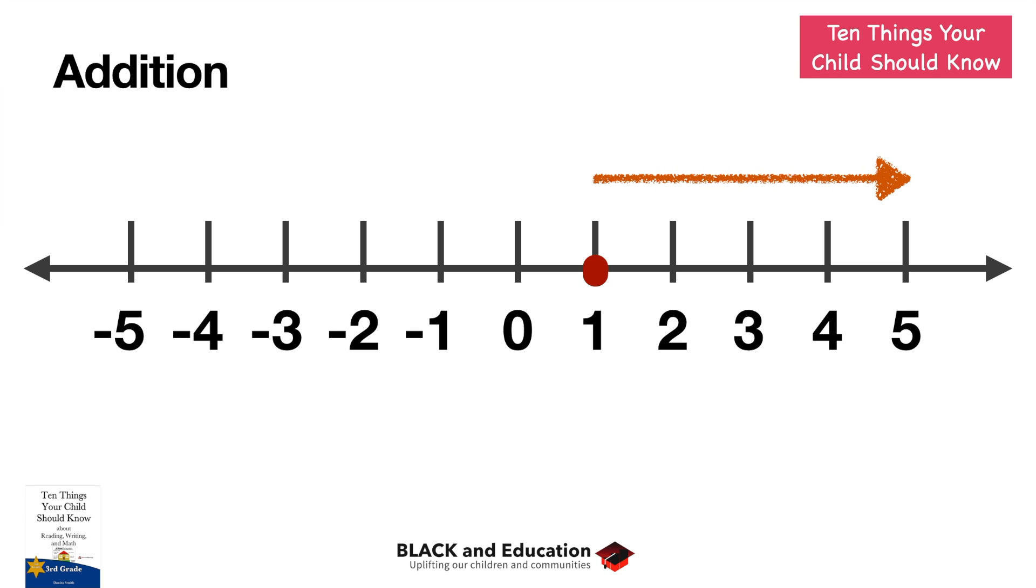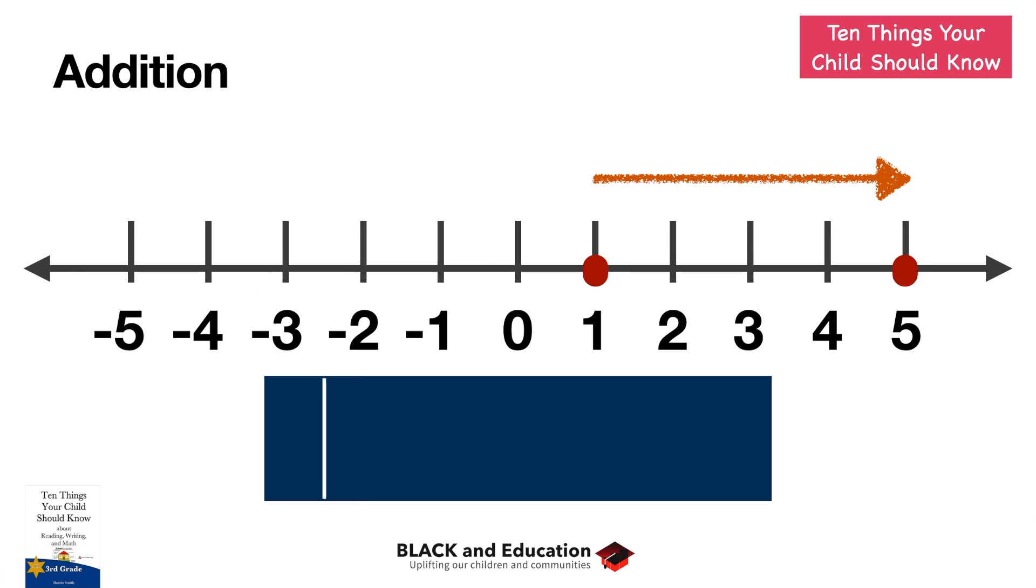So let's say I'm at the number one on the number line, positive one. I want to go up four spaces. I want to add four to one. What I'm essentially doing is moving right on the number line. So one plus four, as you can see, is equal to five. I just move right four spaces on the number line.